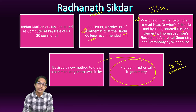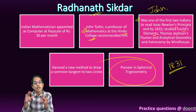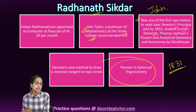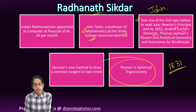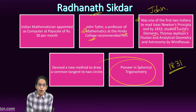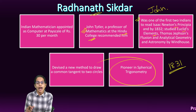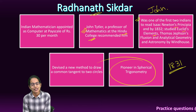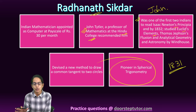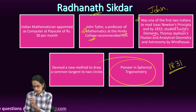Based on what he had studied, Radhanath devised a new method to draw a common tangent to two circles, and his contributions to spherical trigonometry were very remarkable. As a result, George Everest appointed Radhanath Sikdar as an Indian mathematician — to a post called 'computer' — at a pay scale of 30 rupees per month.